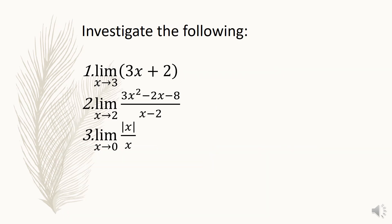Let us now investigate the following: first, the limit of 3x plus 2 as x approaches 3; second, the limit of (3x squared minus 2x minus 8) all over (x minus 2) as x approaches 2; third, the limit of the absolute value of x over x as x approaches 0. The answers are: the limit of 3x plus 2 as x approaches 3 is 11; the limit of (3x² minus 2x minus 8) over (x minus 2) as x approaches 2 is 10; and the limit of |x| over x as x approaches 0 does not exist.